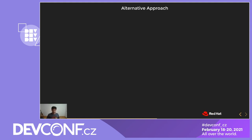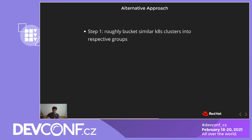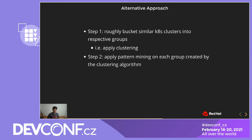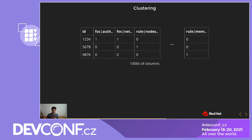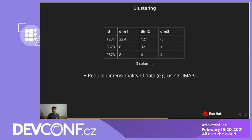The approach that we now take is, first, roughly bucket the clusters into groups such that within each group you have Kubernetes clusters that behave somewhat similarly. In data science terms, this is essentially applying clustering. Then, once you have this grouping, you apply pattern mining on each of these groups separately. For clustering, our data set had several columns — maybe even a thousand columns — and most clustering algorithms will not perform very well with such high dimensionality. So the first thing we do is reduce the dimensions by applying a dimensionality reduction method like UMAP or PCA, and once we have our representation in lower dimensions, we go ahead and apply clustering.